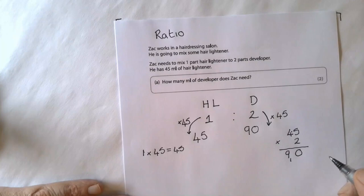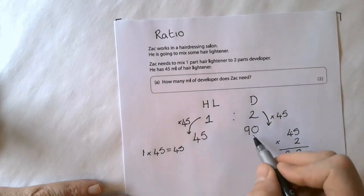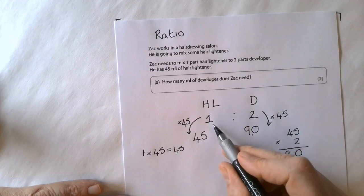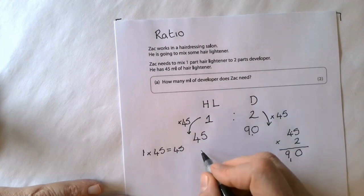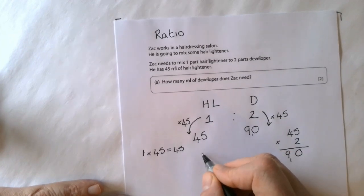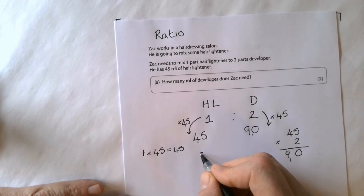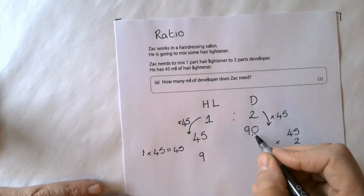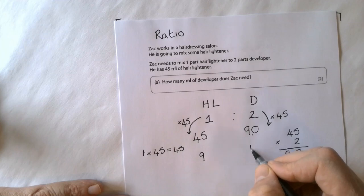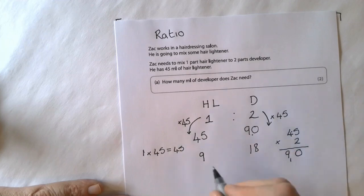Now to check that you're correct, you could always re-simplify the 45 to 90 to check whether it ends up as the ratio 1 to 2. So if I divide 45 by 5, I get 9. If I divide 90 by 5, I'd get 18. I've divided both by 5.